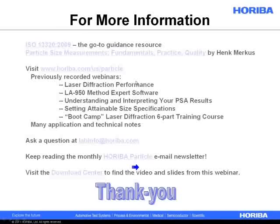Gregory asks where he can find more information about the R parameter — we have a technical note on our website that discusses the R parameter and the chi-square value, in the Download Center under Technical Notes. Ryan asks: when he uses ultrasonics, sometimes the transmittance drops out of the green zone — what effect does this have on the final measurements? This is actually very typical. What you're doing with the ultrasonic is improving dispersion — taking large agglomerates that may look like 5 microns in diameter and dispersing them into 1-micron primary particles, so the total surface area increases and more light gets scattered.